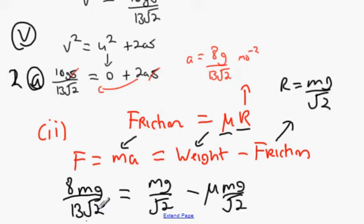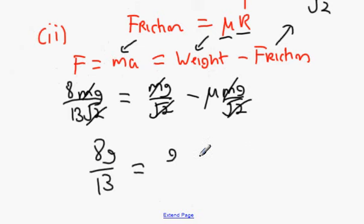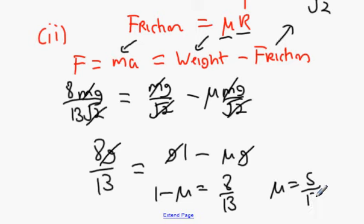The root 2 cancels both sides and M cancels. Tidying up: 8G/13 = G − mu·G. That gives us 1 − mu = 8/13, therefore mu = 5/13.